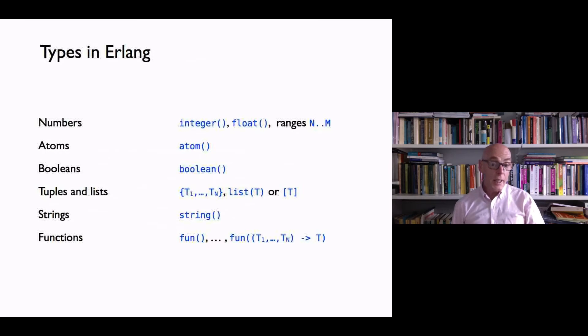Now the sorts of types that Erlang contains are, we've seen already, but let's just describe them briefly or a subset of them: integers and floats, generally numbers, type of atoms, type of booleans.